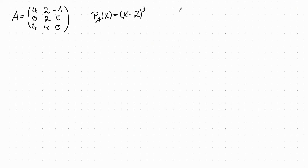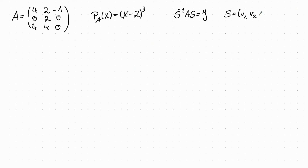We want to find a matrix S such that S times A times S inverse is in Jordan normal form, and we call the columns of S: V1, V2, V3.